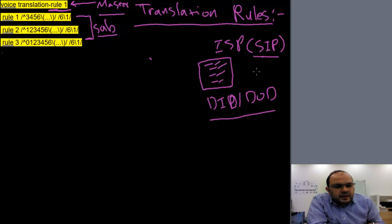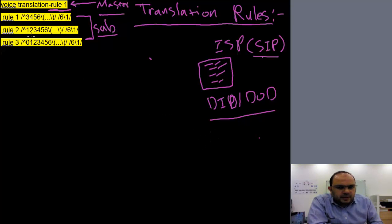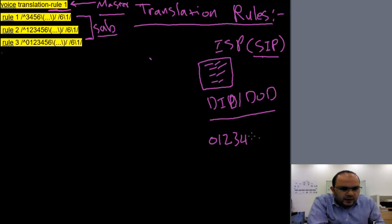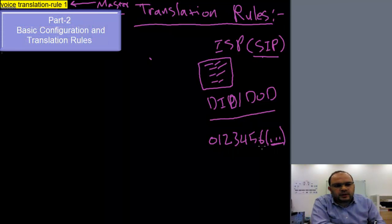The service provider must give you a number range. For example, suppose they give you 0, 1, 2, 3, 4, 5, 6 and then a 3-digit number — it could be 111, 123, 345, whatever you need. So this is my national number in my country.